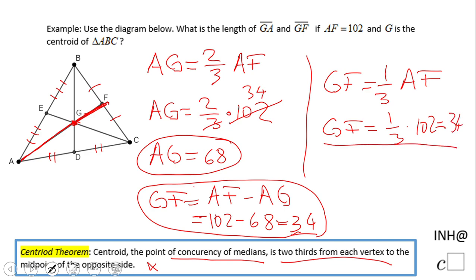And another way, if you want, is this one: AG is twice GF. So all these ways give you the same answer.